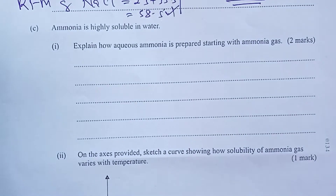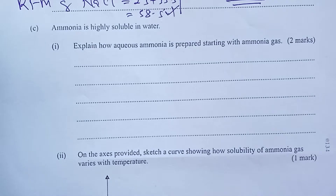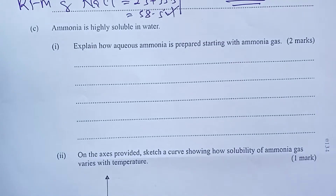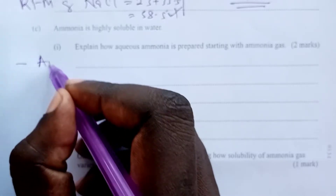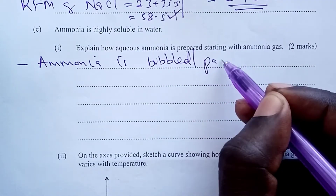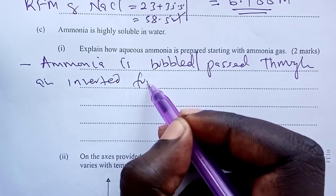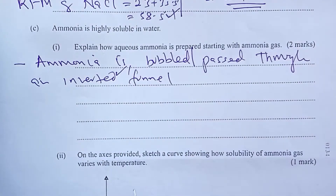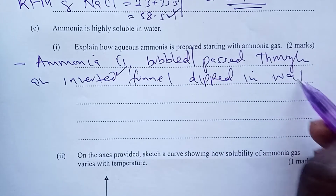Part C: ammonia is highly soluble in water. The question asked to explain how aqueous ammonia is prepared starting with ammonia gas. If you remember your theory, this is where we use an inverted funnel — and please, without the word 'inverted,' there are no marks. Ammonia is bubbled or passed through an inverted funnel dipped in water in a beaker. Just mentioning the inverted funnel gets you full marks.